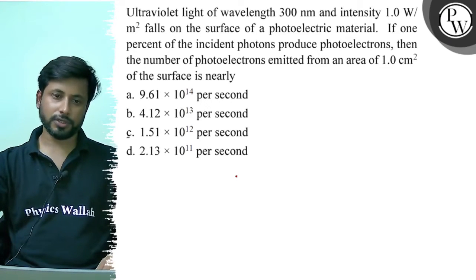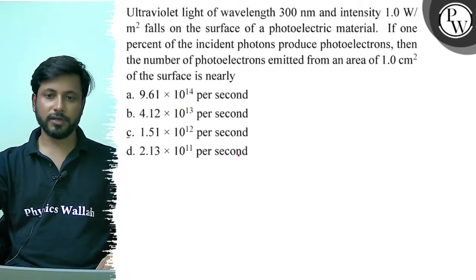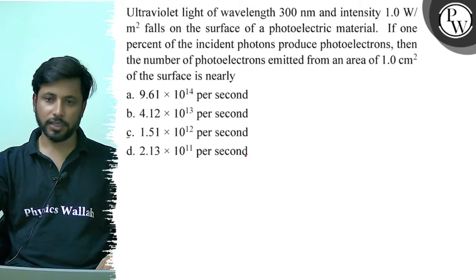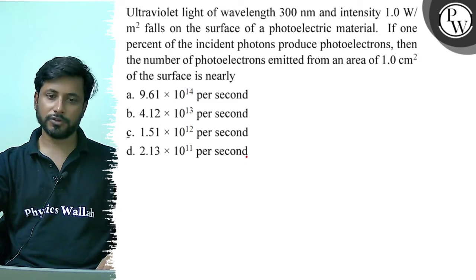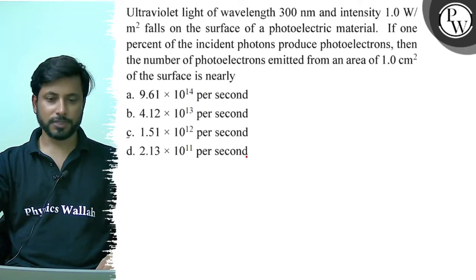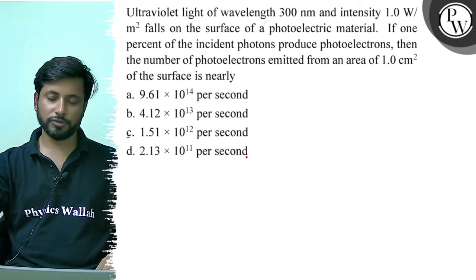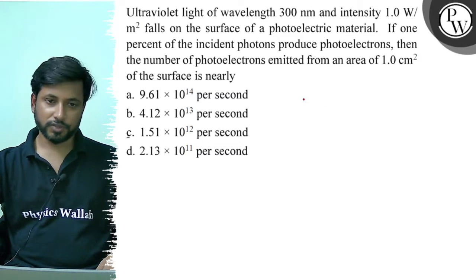Hello, let us see this question. Ultraviolet light of wavelength 300 nanometer and intensity 1 watt per meter square falls on the surface of a photoelectric material. If one percent of the incident photons produce photoelectrons, then the number of photoelectrons emitted from an area of one centimeter square of the surface is nearly: option A 9.61×10^14 /s, option B 4.12×10^13 /s, option C 1.51×10^12 /s, option D 2.13×10^11 /s.